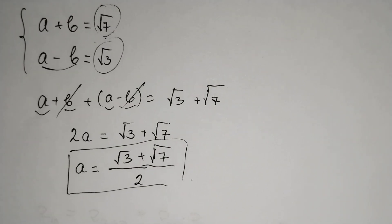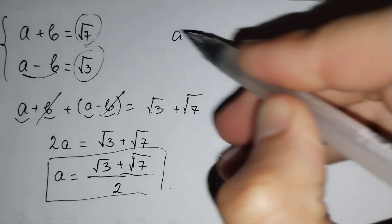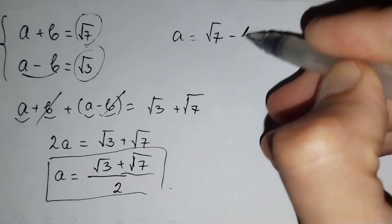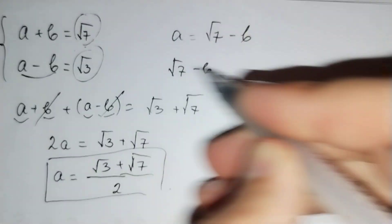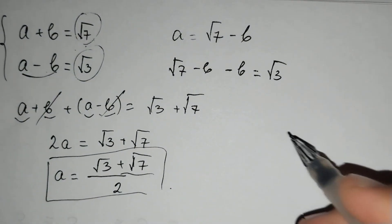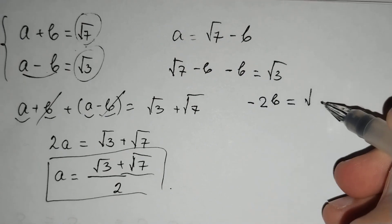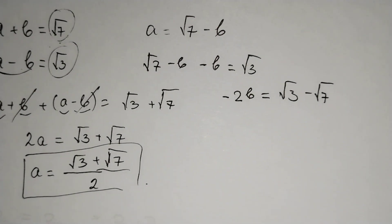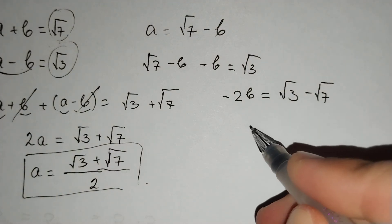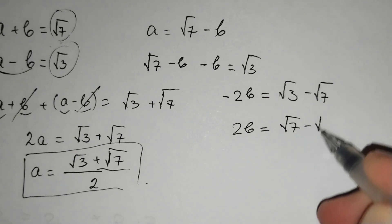We should also find b. From the first equation, a equals square root of 7 minus b. Substituting and simplifying, we get negative 2b equals square root of 7 minus square root of 7, and dividing each side by negative 1 gives b equals square root of 7 minus square root of 3.